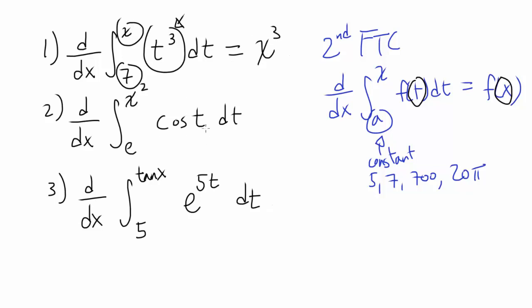Now let's look at the second one: derivative with respect to x of the integral from e to x squared of cosine t dt. To begin with, how are we going to treat this? Instead of x, you have x squared going on. The answer is quite simple—we're going to use chain rule.